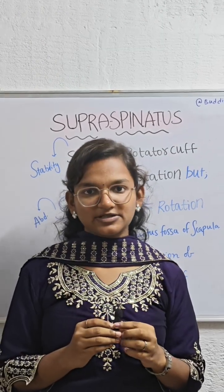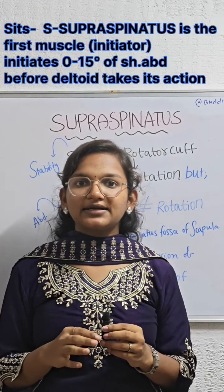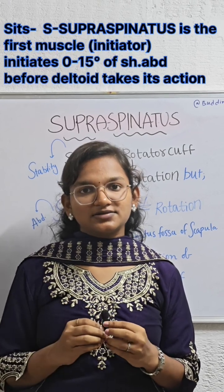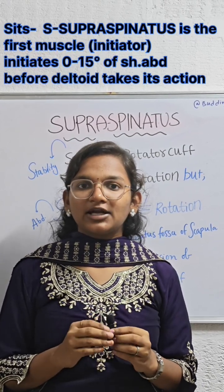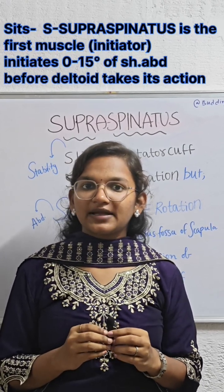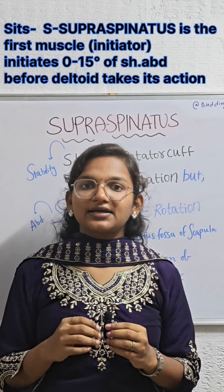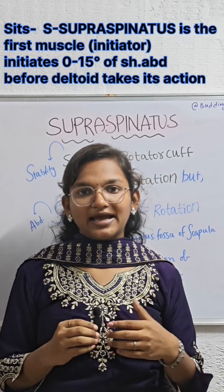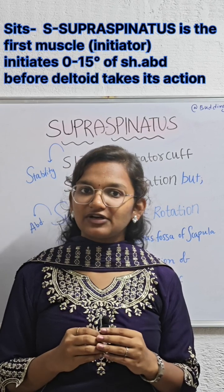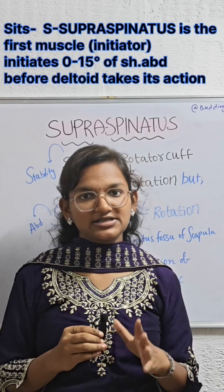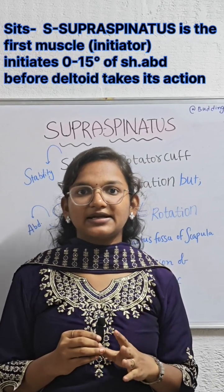The supraspinatus initiates the first 0 to 15 degrees of shoulder abduction. Both deltoid and supraspinatus perform shoulder abduction, but supraspinatus is responsible for the first 15 degrees of abduction. This is the unique feature of supraspinatus.